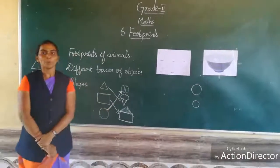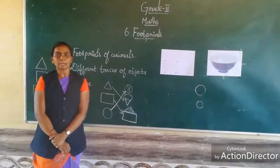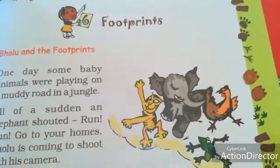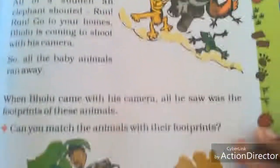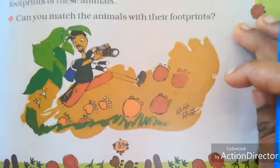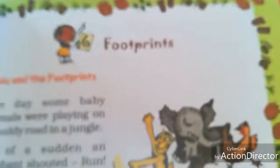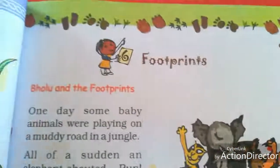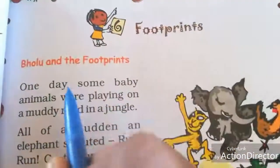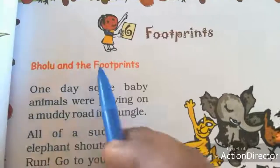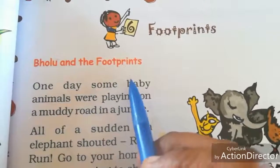Now open your book. I will briefly explain about the lesson. Open your book to page number 59. Lesson name: Footprints. Look here — Bolu and the Footprints.